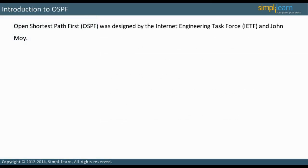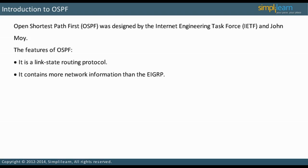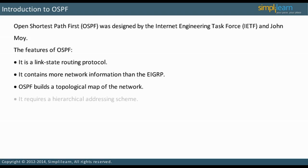Let us start our discussion of OSPF version 2 for IPv4. OSPF was designed by the Internet Engineering Task Force, IETF, and John Moy. It is a link state routing protocol. It has more information about the network than EIGRP. OSPF builds a topological map of the network. For OSPF, a hierarchical addressing scheme is required. It uses IP protocol 89.